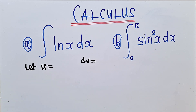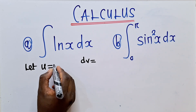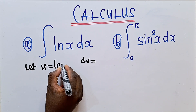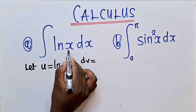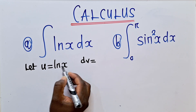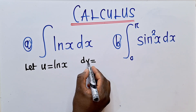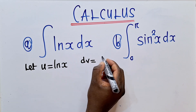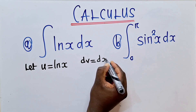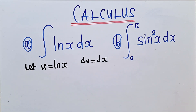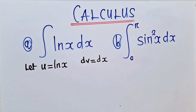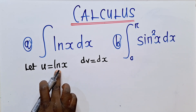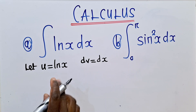So the u will simply be equal to ln x — this ln x, okay, that's our u. And then the dv will be what has remained, which is dx. So once you get to find your u and dv, you find the derivative of what is here — the derivative of ln.